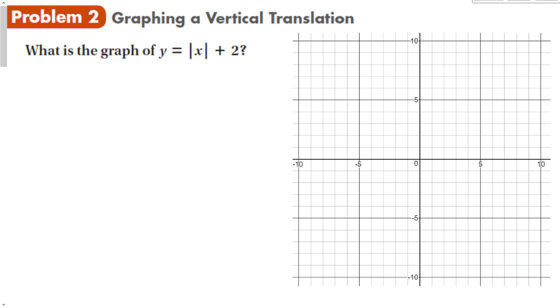When we look at y equals the absolute value of x plus 2, I could make a table and plug in all the numbers, or I could say I know that (0, 0) is on the parent function y equals the absolute value of x. So if I shift it up 2, that point moves to (0, 2) on the new function. The point (1, 1) on the parent shifts up 2, and similarly for all other points. This way I was able to graph the function without making a whole table.